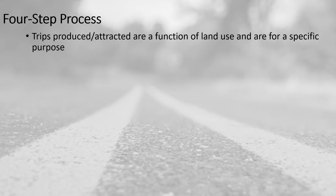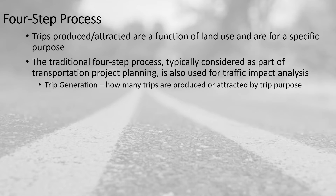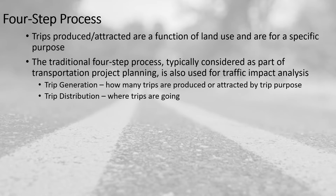Implicit in this process is that trips are produced or attracted based on a function of the land use and for that specific purpose. The four steps include trip generation — how many trips are produced or attracted by trip purpose — and the common standard source for this is the ITE Trip Generation Handbook.